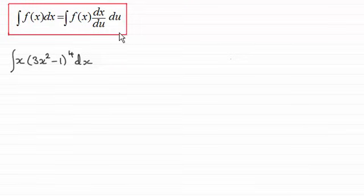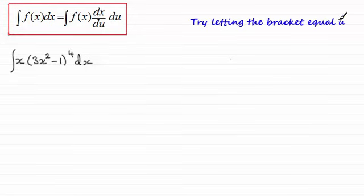Now, some people call this change of variable rather than integration by substitution purely because what we do is we change the integral from a function of x, integrating it with respect to x, to a function of u and we integrate it with respect to u. Now, when you get an integral like this that's got a bracket to a power, try this. Try letting the bracket equal u.